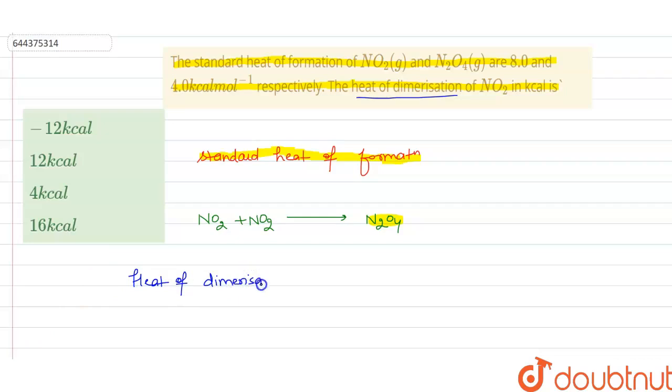Heat of dimerization is equal to the change in standard heat of formation of the products minus the change in enthalpy of formation of the reactants. So I repeat, the heat of dimerization is the summation of the change in enthalpy of formation of product minus enthalpy of formation of reactant.